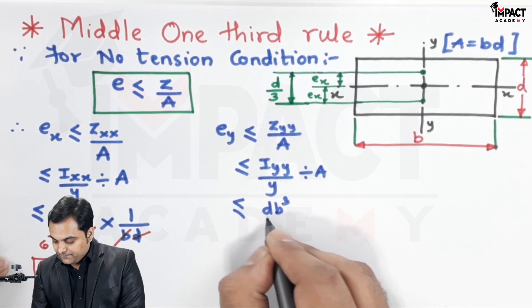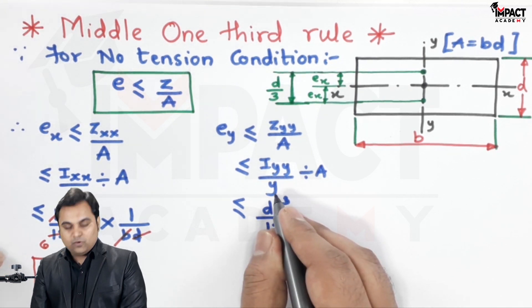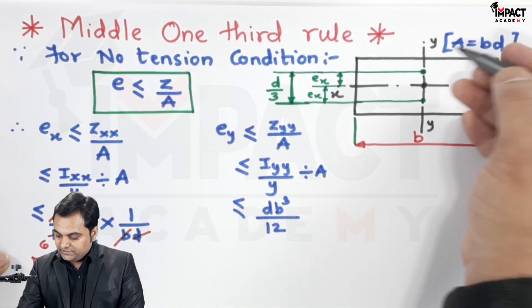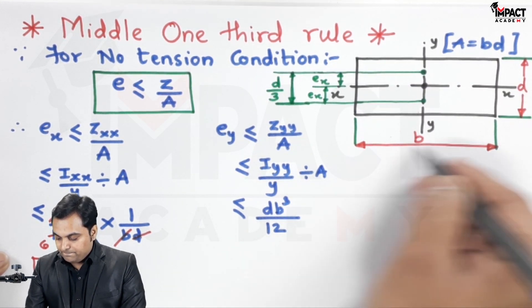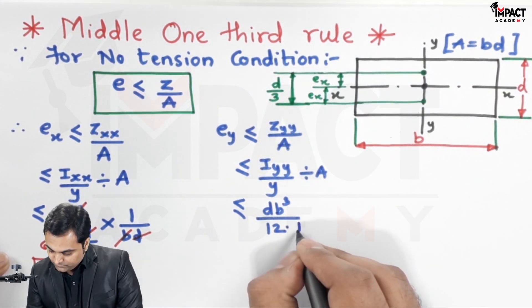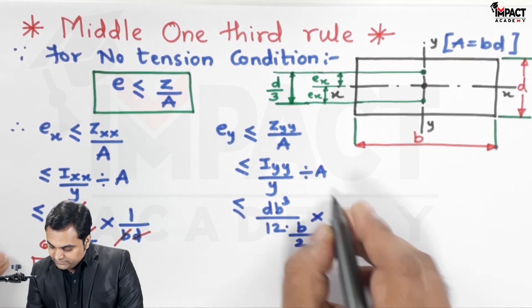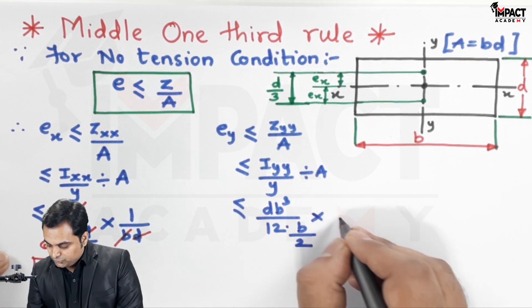db³/12 divided by y. And since we are taking the moment of inertia about the y-axis, it is cutting this b, so y becomes b/2.